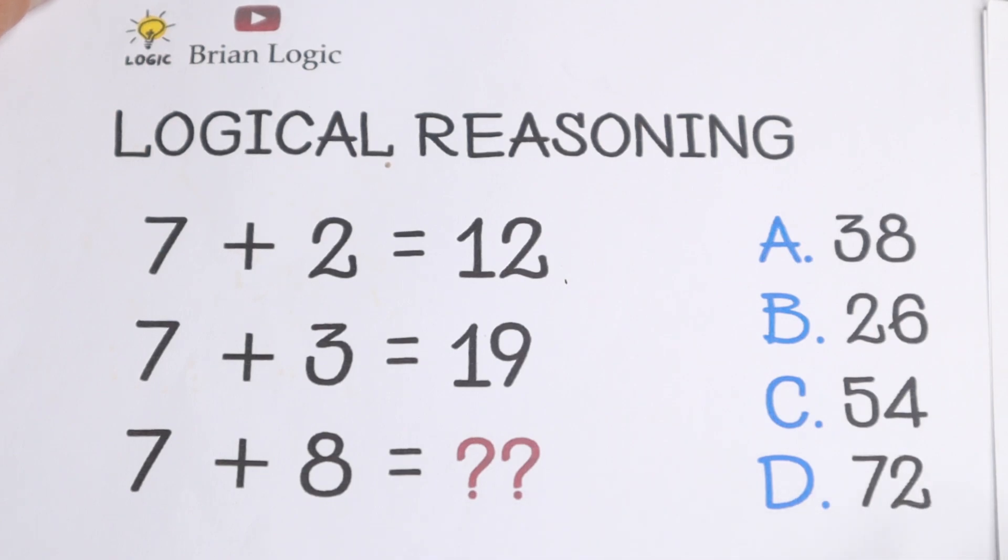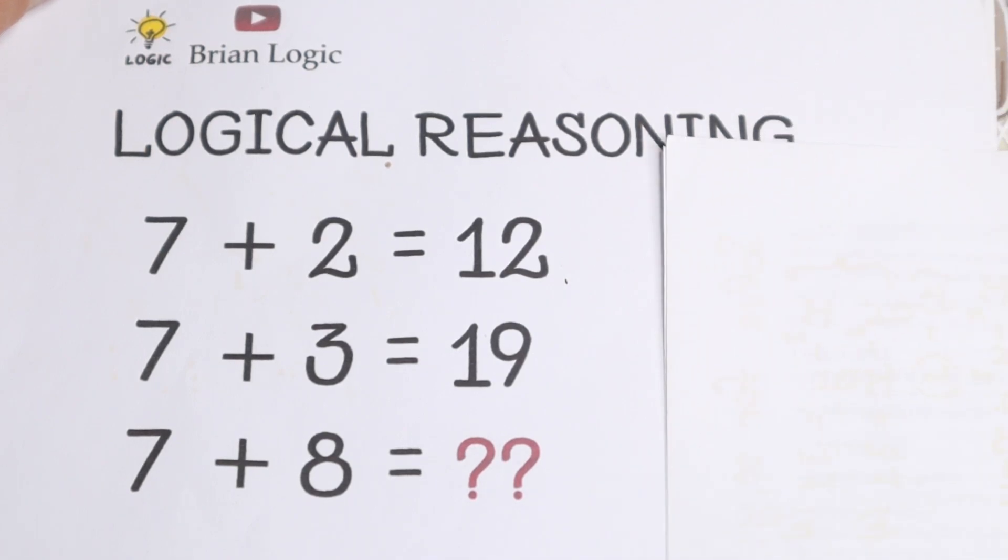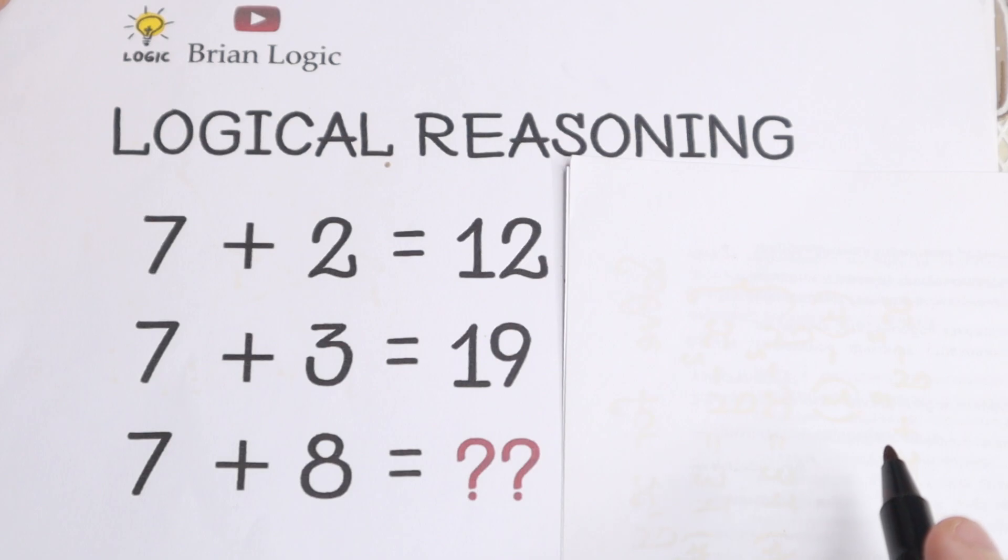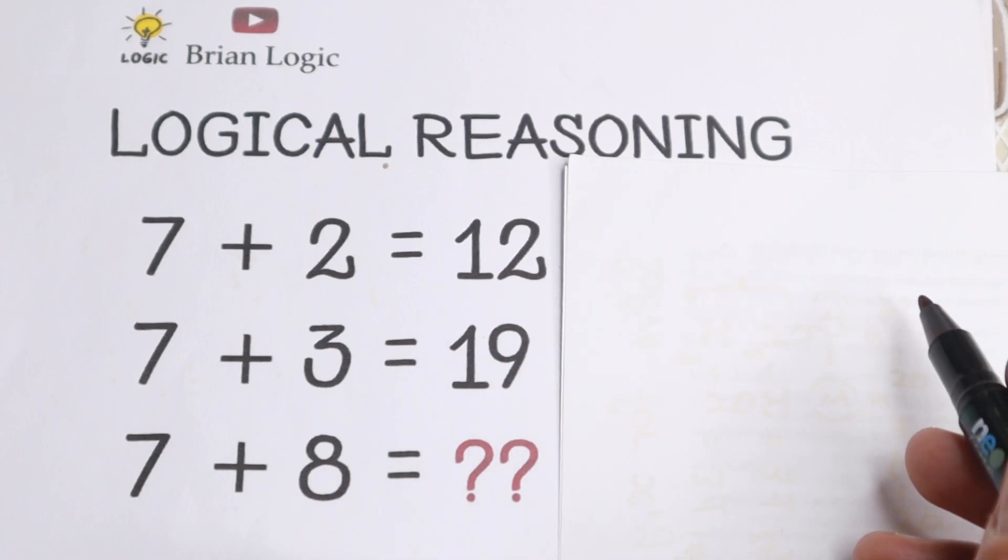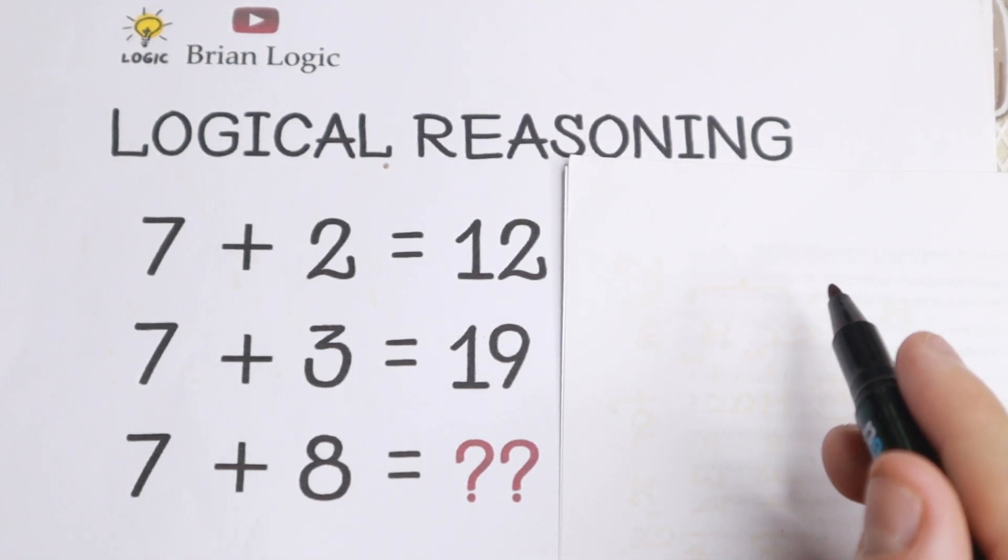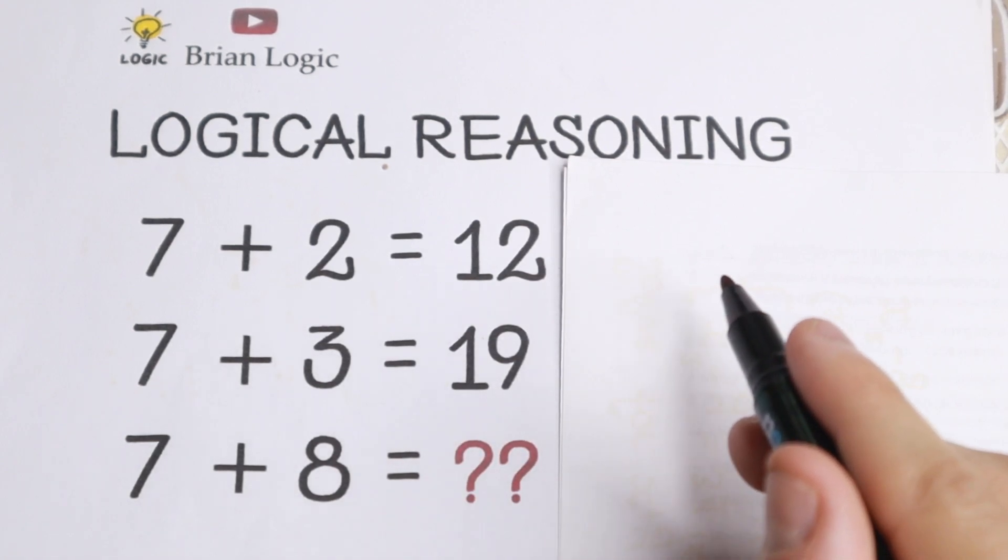Okay we have 7 plus 2 equal to 12, 7 plus 3 equal to 19, we need to work with these numbers. But what is the pattern between 12 and 19? As for me I don't see any pattern between all these numbers, but right now I see a really interesting pattern between those on the left hand side.